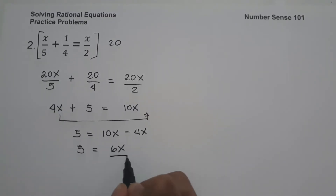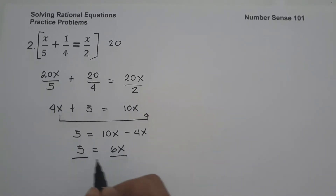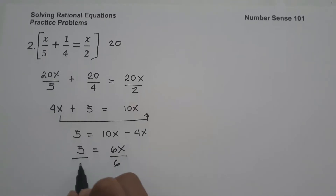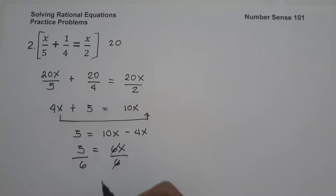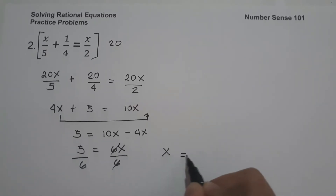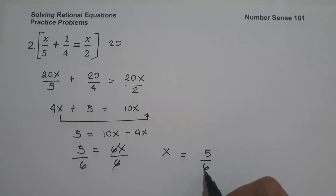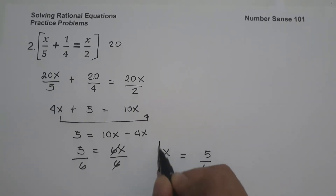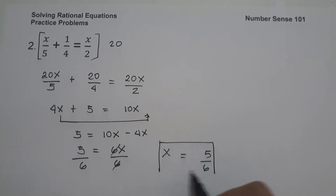So let us divide the whole equation by 6. The value of x is 5 over 6, and this will be our answer.